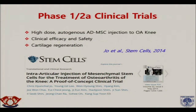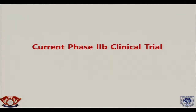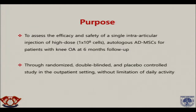Our group has also performed Phase 1 and 2A clinical trials, published in Stem Cells. However, those had performance bias because we treated not only with mesenchymal stem cell injection, but also performed arthroscopic lavage to observe intraarticular findings before and after treatment, required admission due to surgery, and had no control group. So we then performed Phase 2B clinical trials with a control group, designed to assess efficacy and safety of a single intraarticular injection at high dosage — 100 million cells — of autologous adipose-derived mesenchymal stem cells for knee osteoarthritis at 6-month follow-up. It was a randomized, double-blinded, placebo-controlled study.